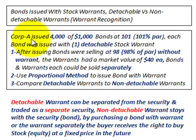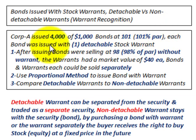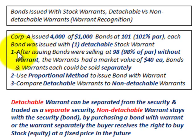For example, Corporation A issued 4,000 bonds at $1,000 each par value, and the bonds were issued at 101% of par. Each bond was sold with one detachable stock warrant per bond. After issuing the bonds, the bonds were selling at 98% of par without the warrant.